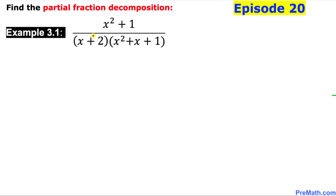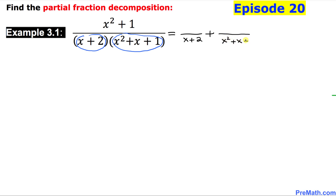Let's look at the denominator right now. As you can see we got two factors. One of them, x plus 2, is a linear factor. The other one, x squared plus x plus 1, is a quadratic one which cannot be factored any further. So we can write one fraction for x plus 2 with denominator x plus 2, and for the quadratic one the denominator is x squared plus x plus 1, with numerator b times x plus c.